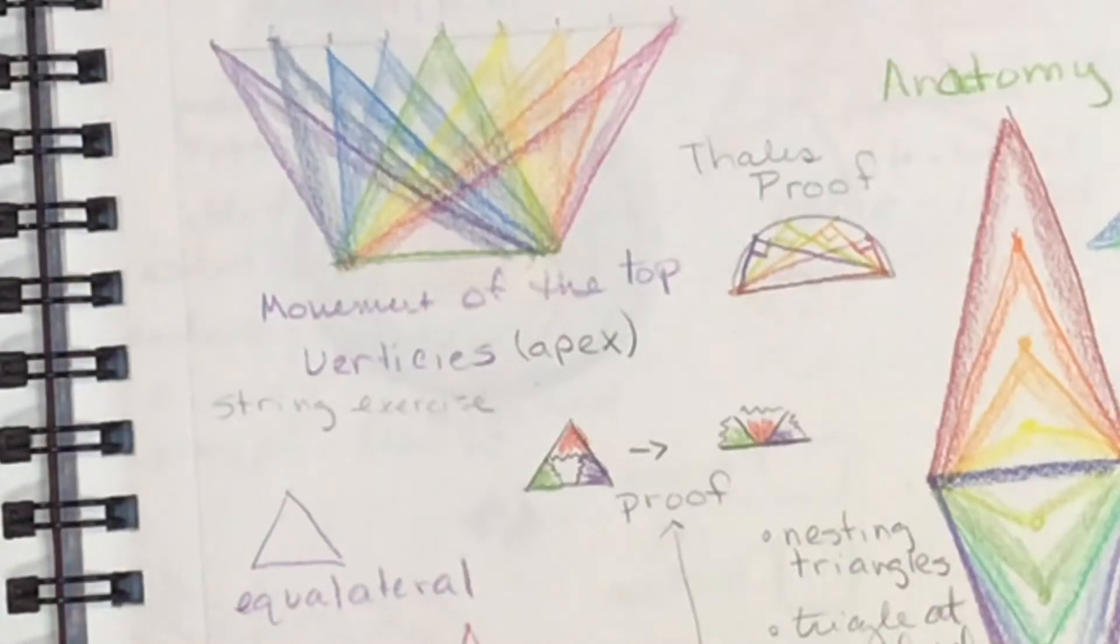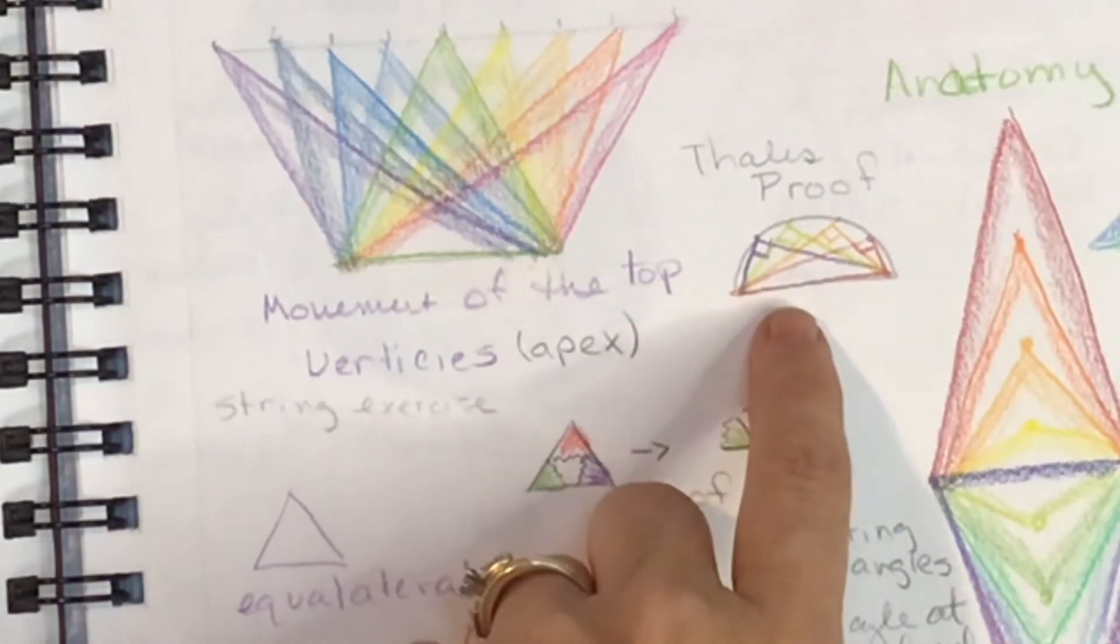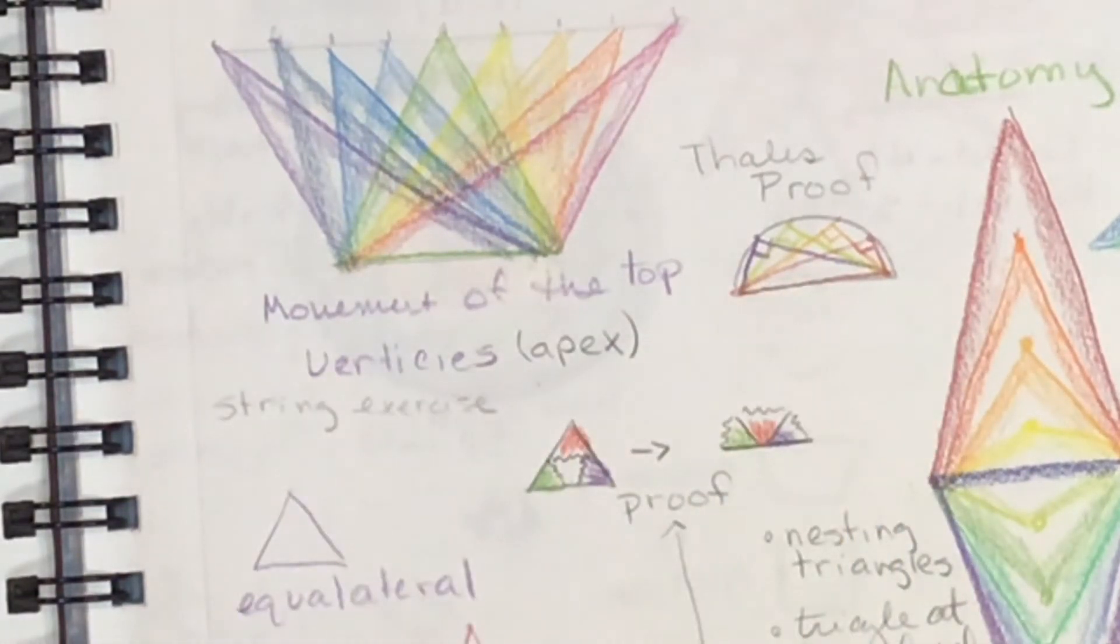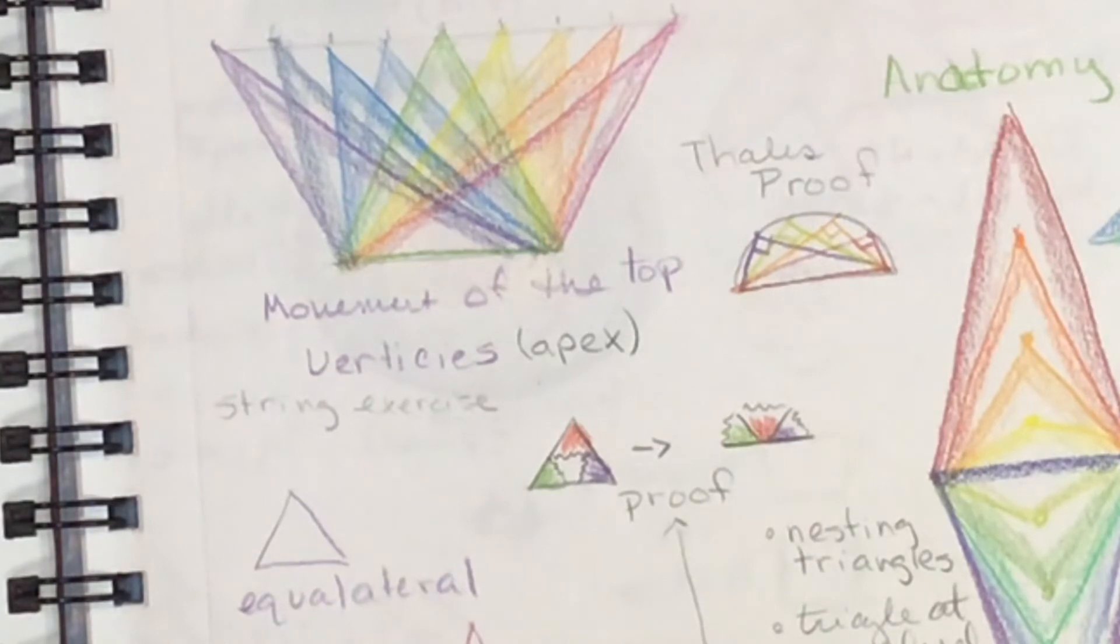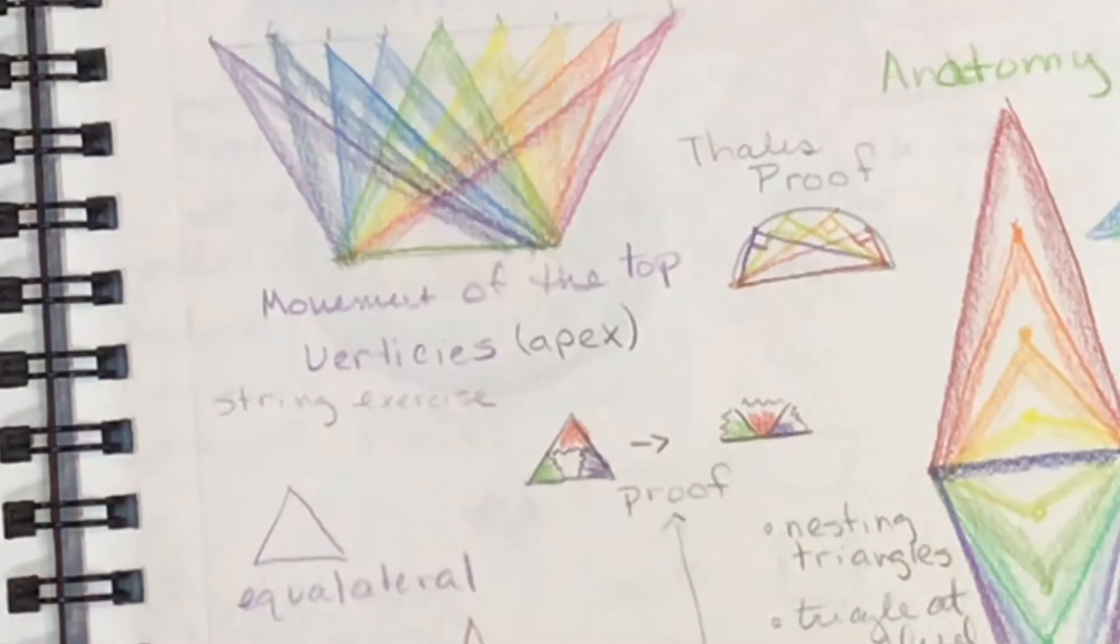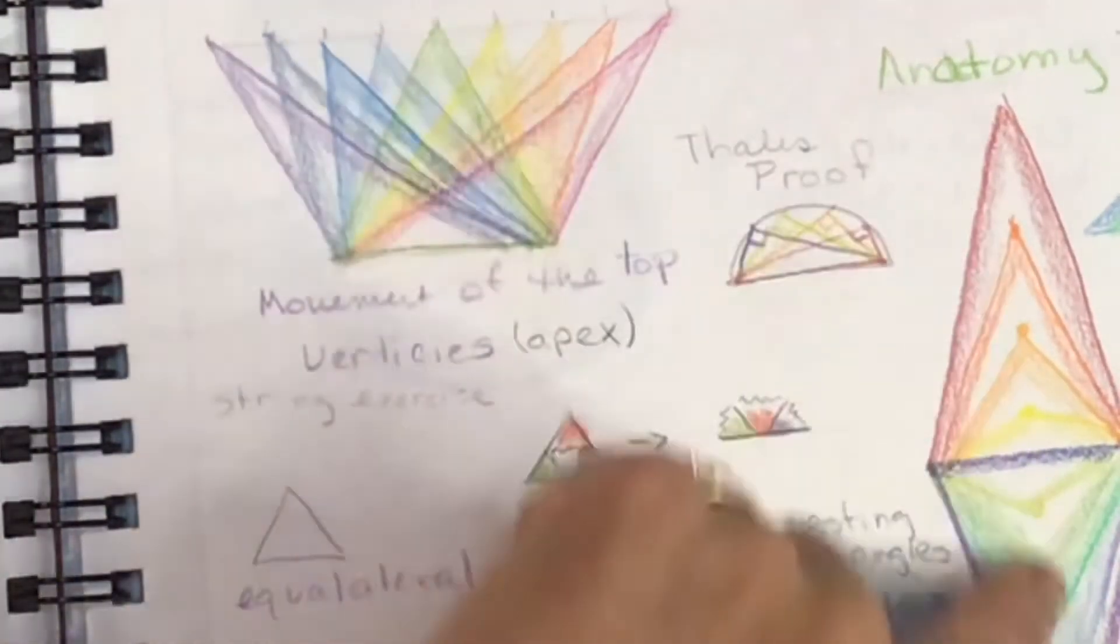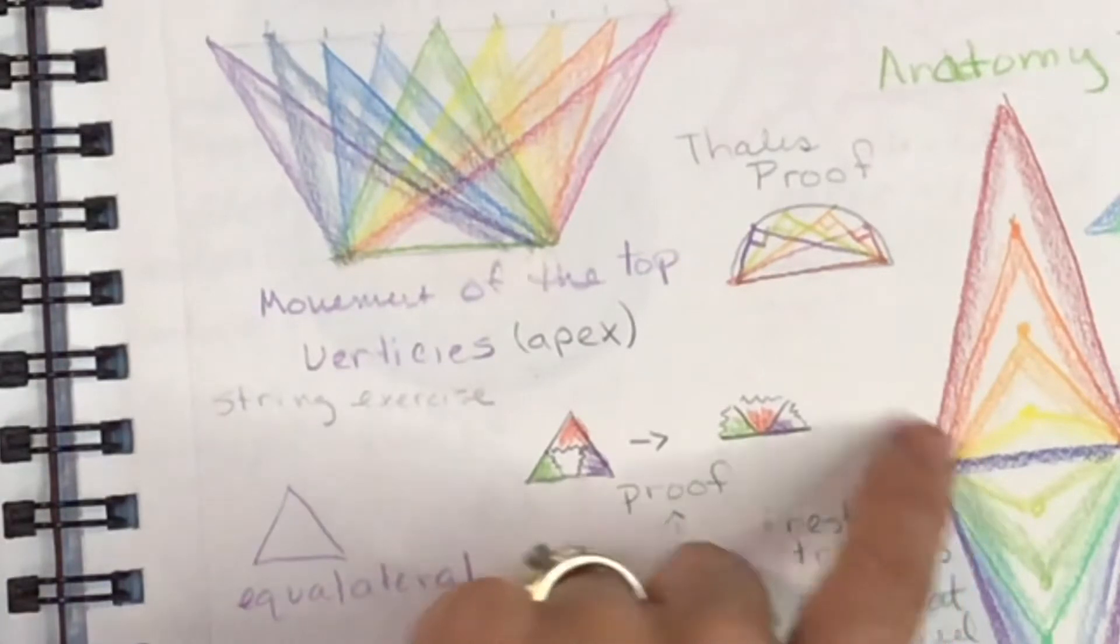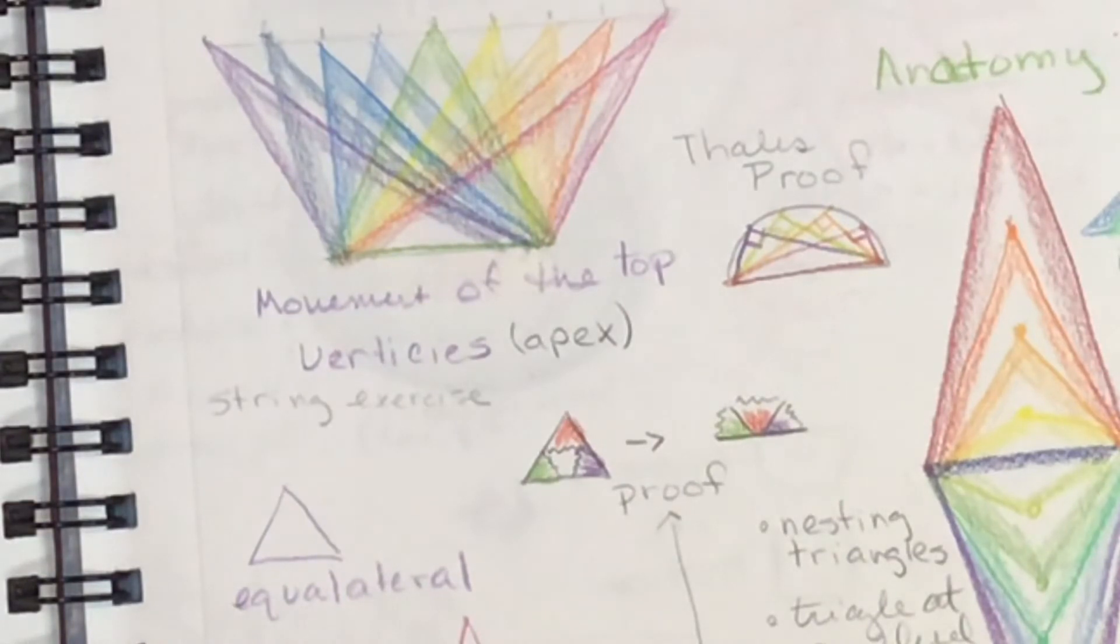We will look at a couple of proofs, including Thales' proof, that a triangle inscribed in a semicircle is always going to have a right angle. And then also that the internal angles of a triangle add to 180 degrees. These are pretty fun, cool little proofs that are easy to do with this age group. And in addition to playing with the apex, moving it closer and farther away from the base, we will also move the apex from side to side and explore that.